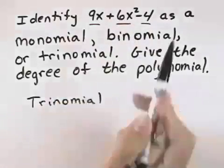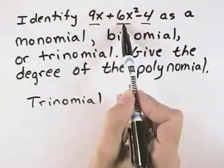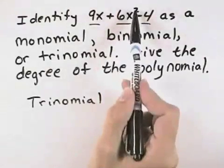Looking at those three terms, we have a variable term here with no exponent, which means the power is 1. We have a variable term here with an exponent of 2, which means the power is 2.